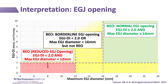We recently proposed an EGJ opening assessment that jointly applies both the EGJ DI and the maximum EGJ diameter — in part to avoid some of the limitations of HRM in the application of the IRP, a single metric with a singular cut point. When both EGJ metrics are distinctly reduced or distinctly normal, classifications of reduced or normal EGJ opening are associated with functional classifications with a high degree of certainty. This does leave a borderline range in the middle in which some uncertainty persists, and in this scenario, complementary testing is likely warranted.